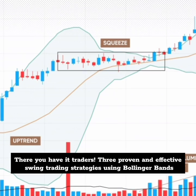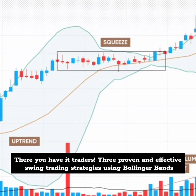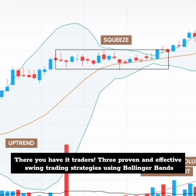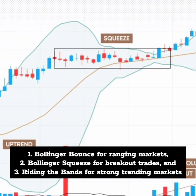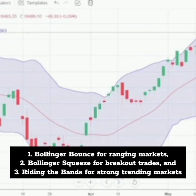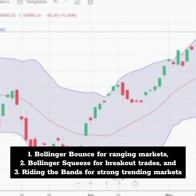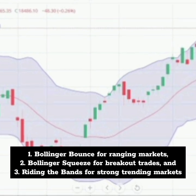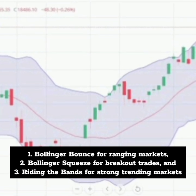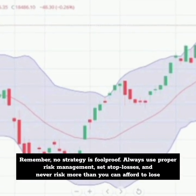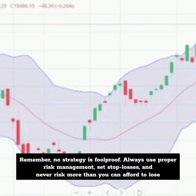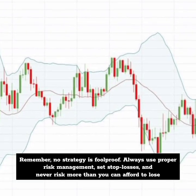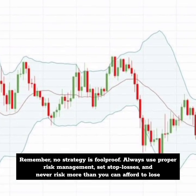There you have it, traders — three proven and effective swing trading strategies using Bollinger Bands: Bollinger Bounce for ranging markets, Bollinger Squeeze for breakout trades, and Riding the Bands for strong trending markets. Remember, no strategy is foolproof. Always use proper risk management, set stop losses, and never risk more than you can afford to lose.